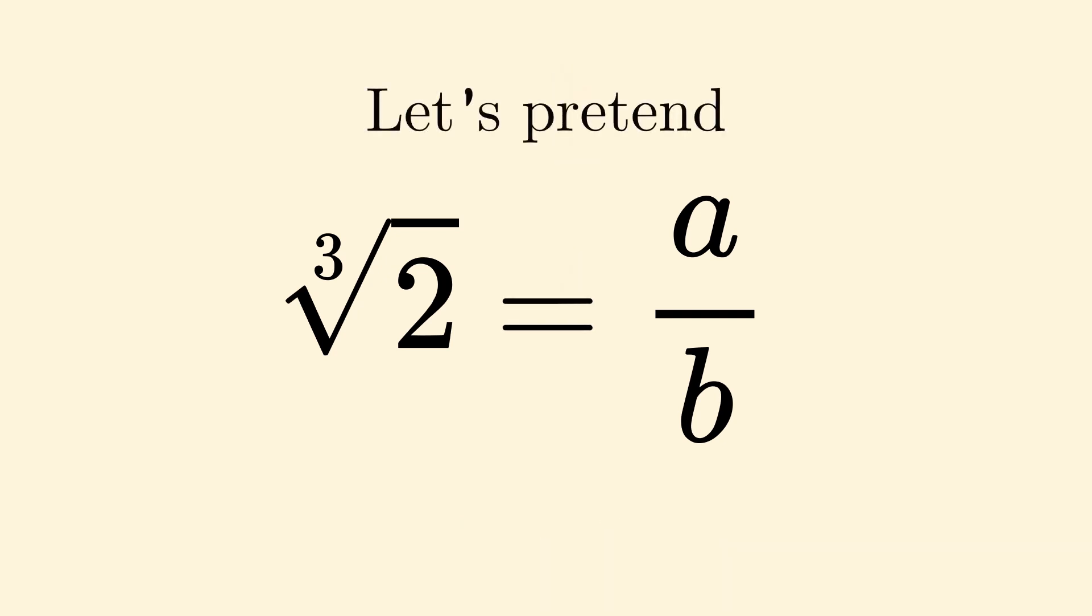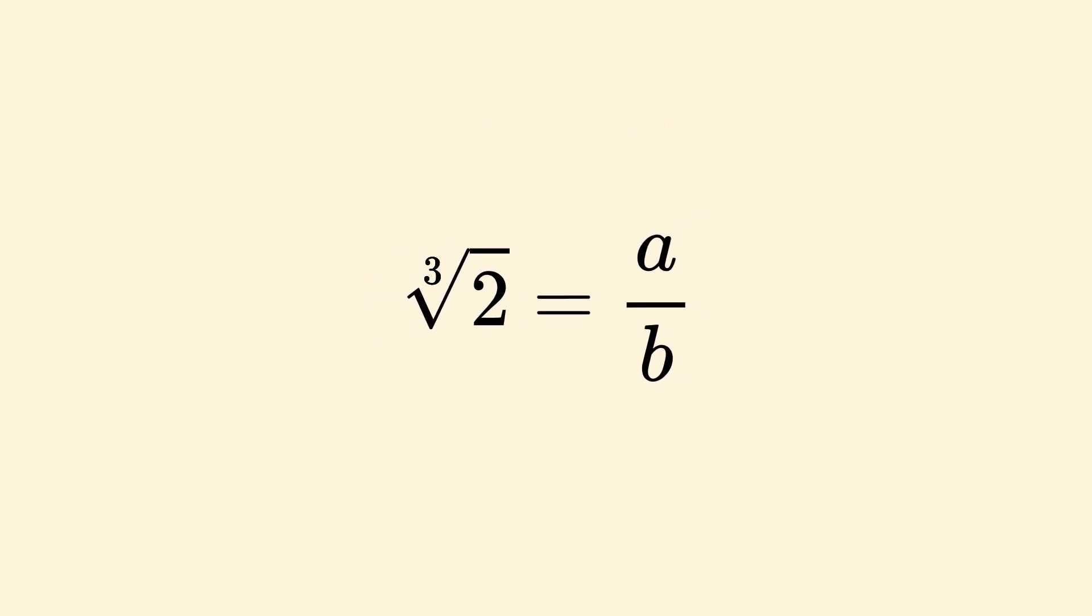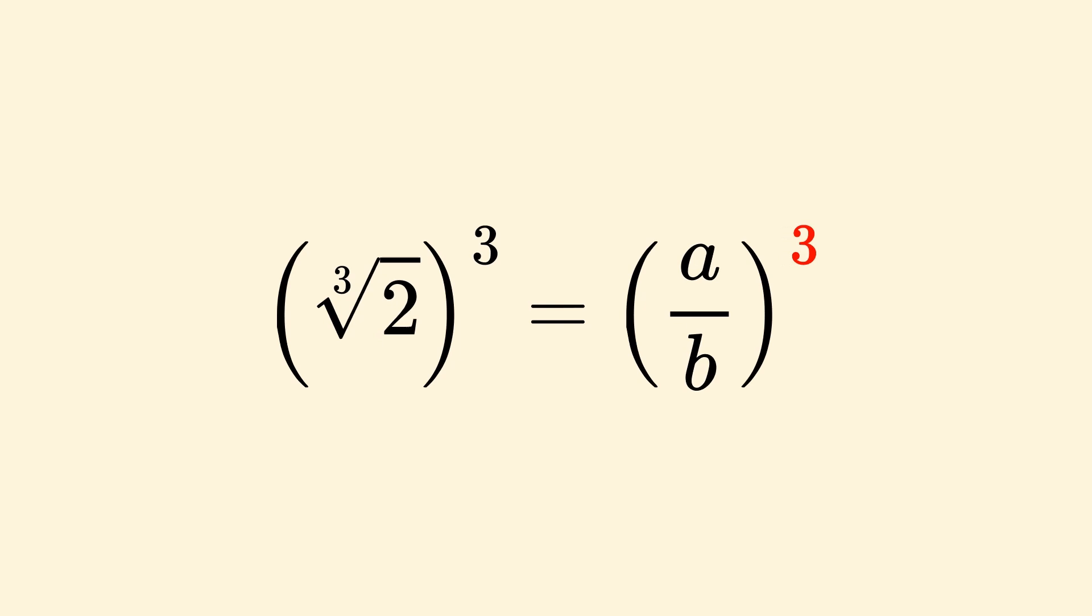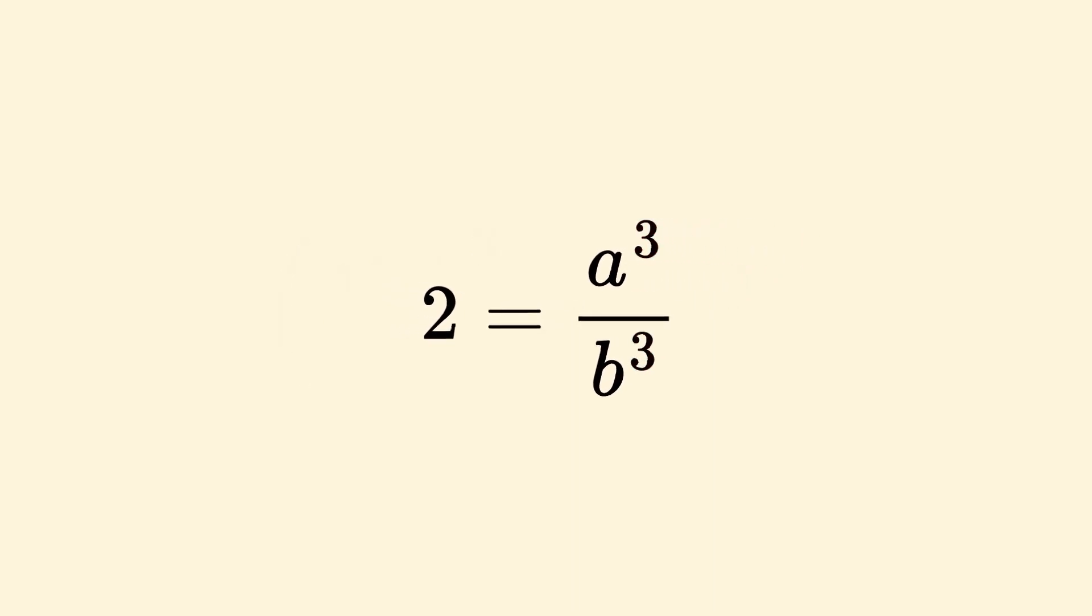Let's pretend that we can write the cube root of 2 as a fraction of two integers. And let's see what happens to that equation as we manipulate it. We'll remove the cube root by cubing both sides. Distribute the cube over the fraction. Multiply both sides by b cubed, moving it over. And then just split the two into b cubed plus b cubed.